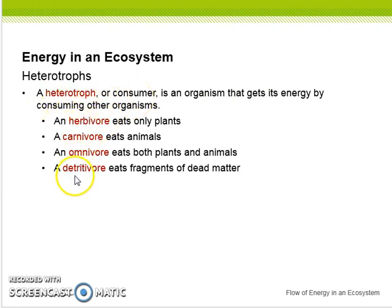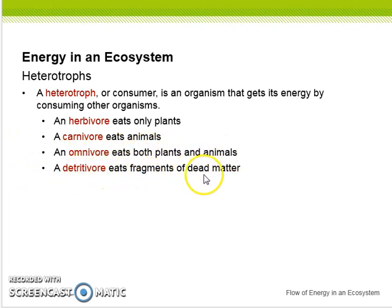There are four types of organisms. A herbivore eats only plants, so it eats autotrophs. A carnivore eats animals. An omnivore eats both plants and animals. And a detritivore eats fragments of dead matter. Examples would be a rabbit eating grass, a bear eating fish, humans eating both meat and plants, and a detritivore would be something like a worm or flies.